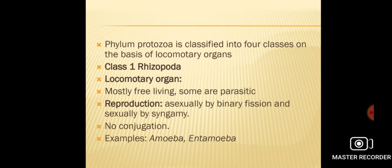This is about the general characteristics of Phylum Protozoa. When we see the classification of Phylum Protozoa, it is classified into four classes on the basis of presence or absence of locomotory organs. The first class is called Rhizopoda. In Rhizopoda, the locomotory organs are pseudopodia. Some animals belonging to Rhizopoda live a parasitic life.